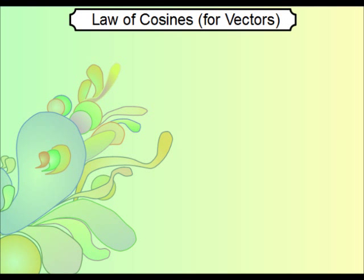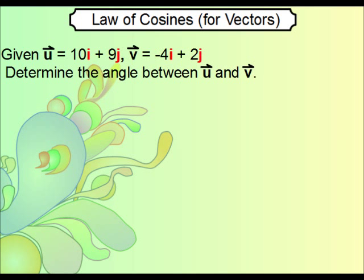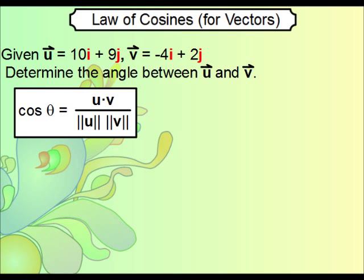Let's move on to one application of the dot product: the law of cosines for vectors. Let's say that we were to determine the angle between vectors u and v. The law of cosines formula—I'm not going to derive it for you for vectors, but it does pretty much come from the ordinary law of cosines. It is the dot product on top divided by the magnitudes of the two vectors on the bottom.